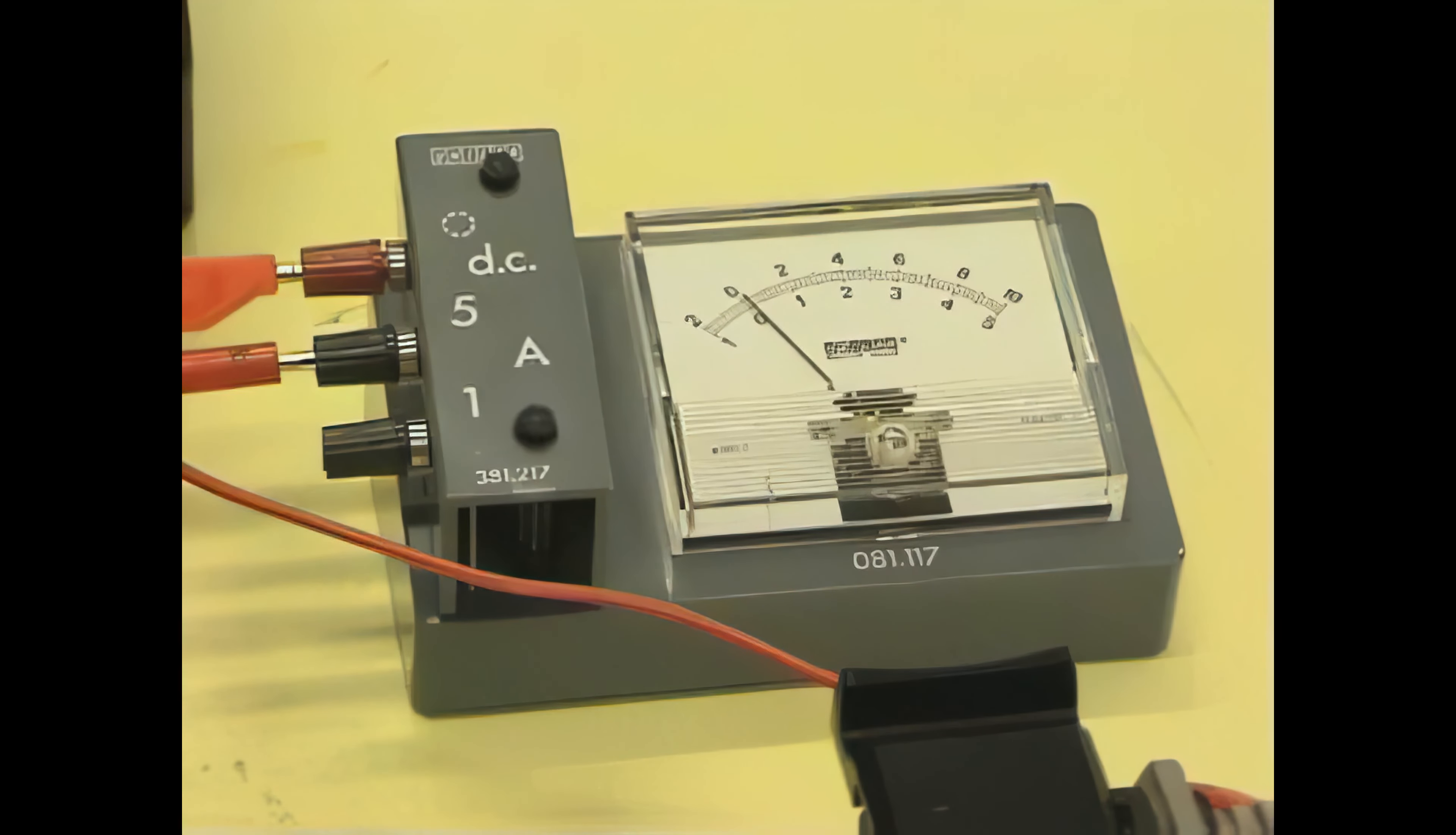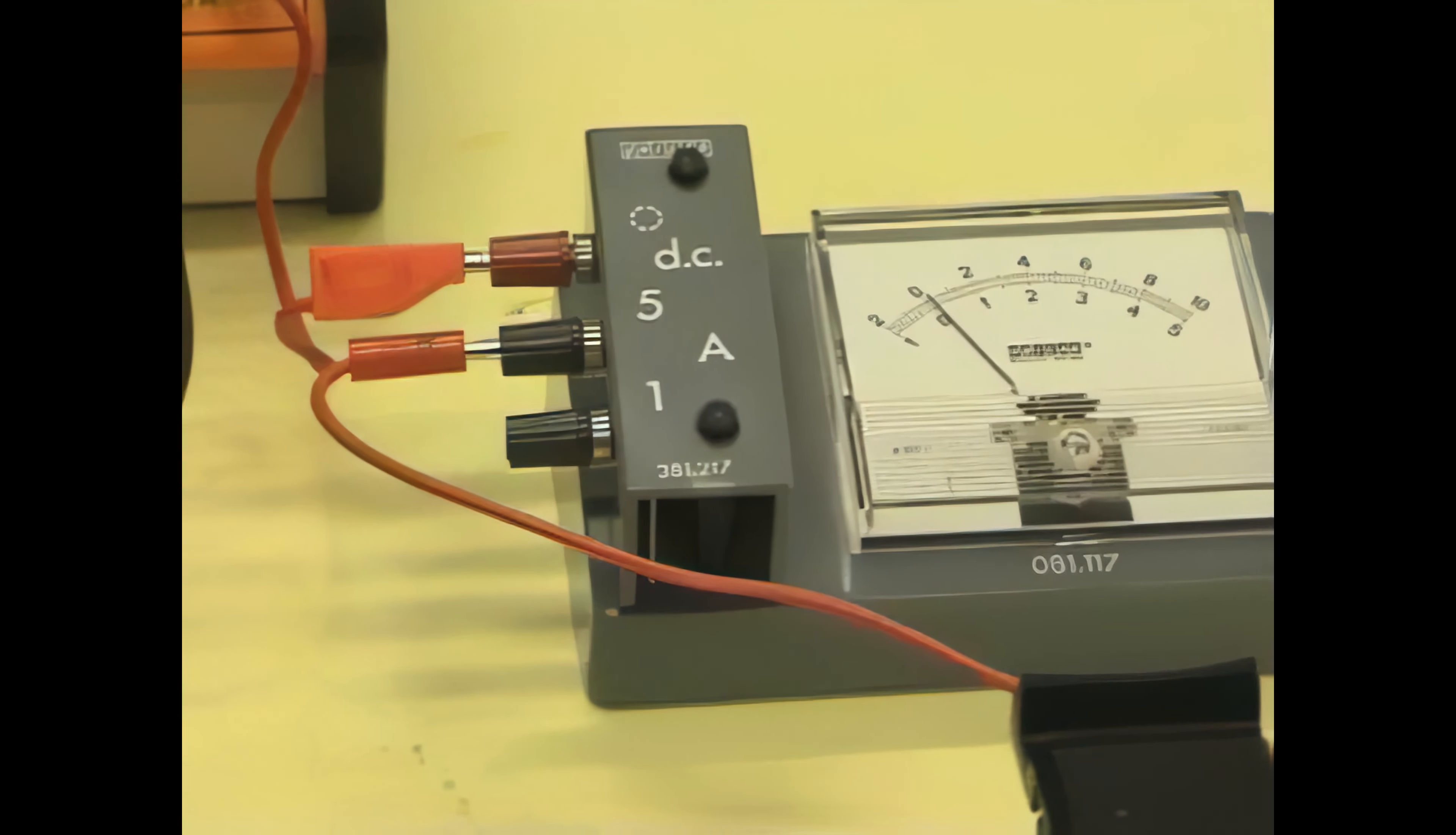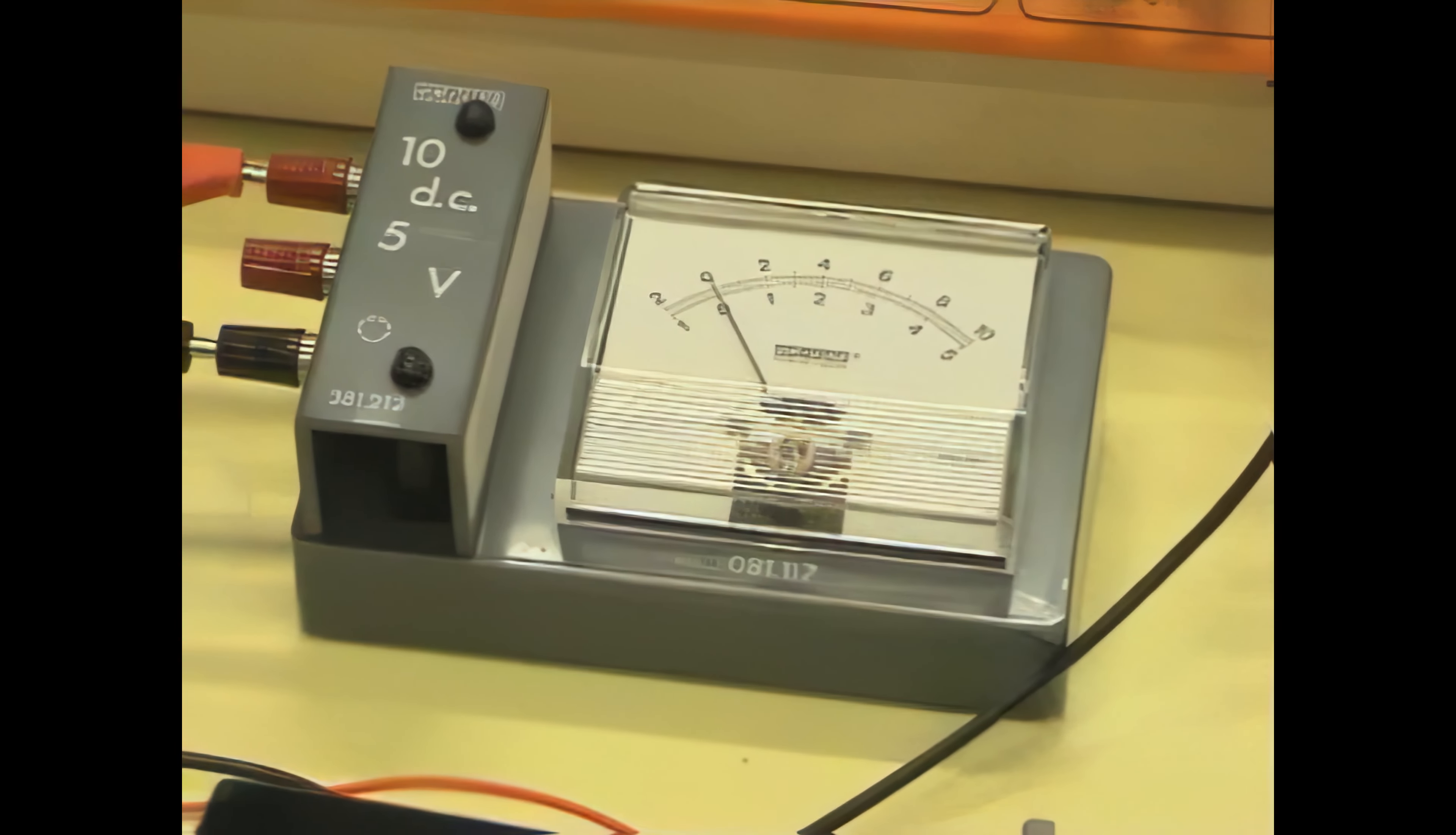The ammeter measures the current flowing through the tungsten filament of the lamp. The voltage across the filament is measured by a voltmeter.